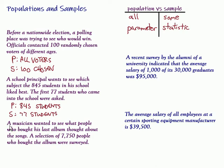Last one here. A musician wanted to see what people who bought his last album thought about the songs. A selection of 7,750 people who bought the album were surveyed. The population that we're interested in, that's typically the tougher one to differentiate. Usually the sample is pretty obvious. They wanted to see what people who bought his last album thought. So the population would be all the people who bought the album.